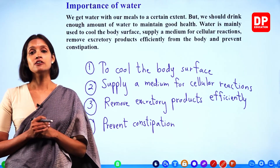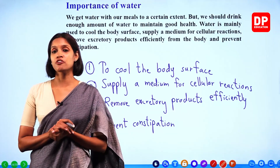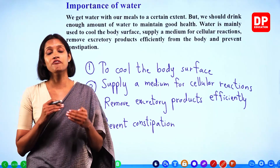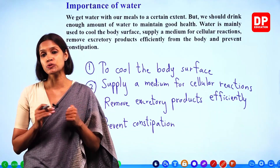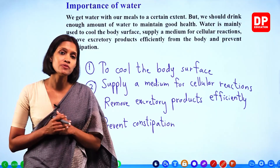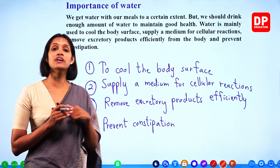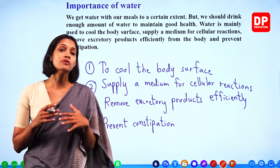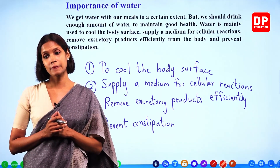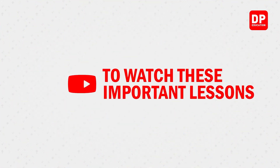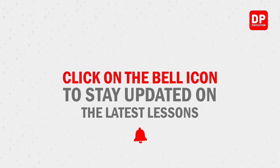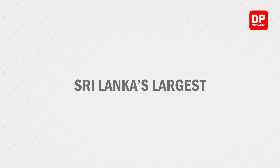We have completed the first chapter of this lesson. We learned about different types of nutrients and their functions, the food items rich in those nutrients, and the importance of water and fiber. In the next chapter, we will learn more information on nutrients. To watch these important lessons, subscribe to DP Education's YouTube channel right now. Click on the bell icon to stay updated. Sri Lanka's largest free online school, DP Education.